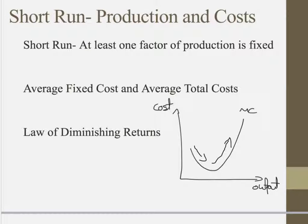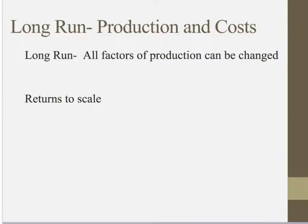We're going to move on to the long run, which is also broken up into two different parts. As discussed earlier, the long run is where all factors of production can be changed. In long run production theory it's important to note what returns to scale means — this describes how output changes when the scale of all factors of production changes. It divides into increasing returns to scale, decreasing returns to scale, and constant returns to scale. As you increase your variable factors, such as plant size or labour force, if the output gain is proportionate it's constant returns to scale, if it's more than proportionate it's increasing returns to scale, and if it's less than proportionate it's decreasing returns to scale.